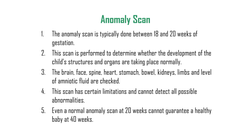To summarize: the anomaly scan is typically done between 18 to 20 weeks of gestation and is performed to determine whether the development of the baby's structures and organs are taking place normally. The brain, face, spine, heart, stomach, bowel, kidneys, limbs, and amniotic fluid level are all checked. The scan has certain limitations and cannot detect all possible abnormalities, and even a normal anomaly scan at 20 weeks cannot guarantee a healthy baby after birth.